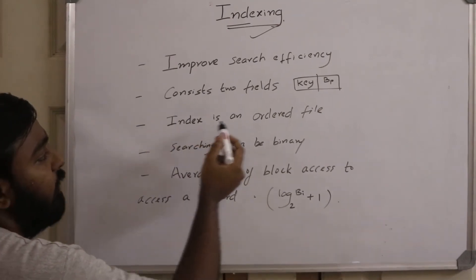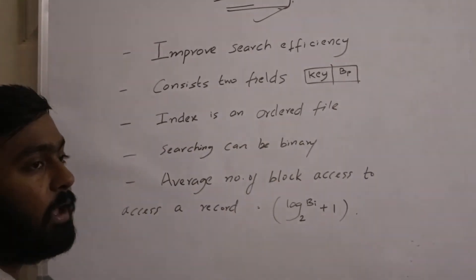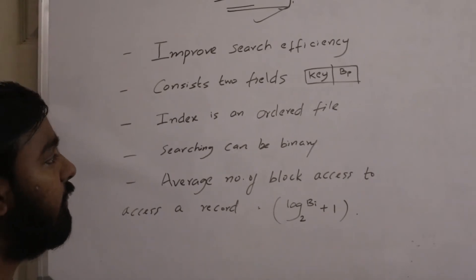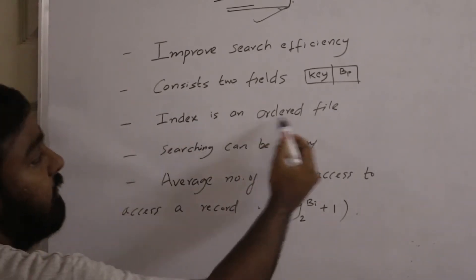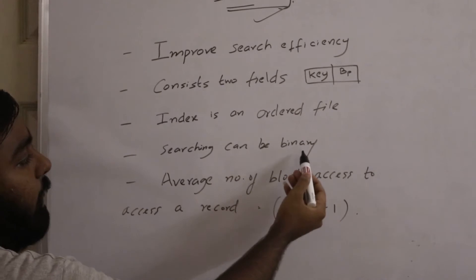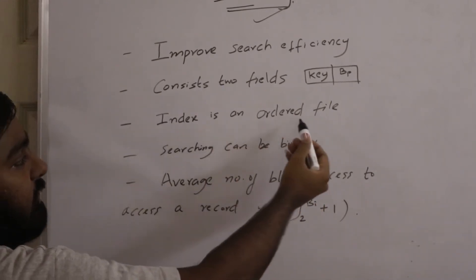The next one is that an index is an ordered file. I told you the data file might be in ordered or unordered fashion, but the index is always ordered. So searching can be binary. Why? Because the index is always an ordered file.